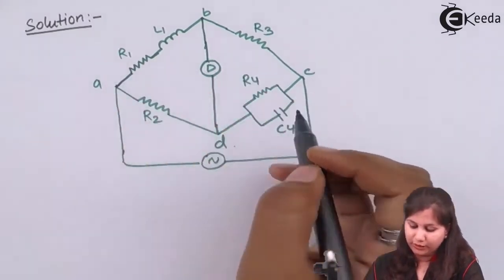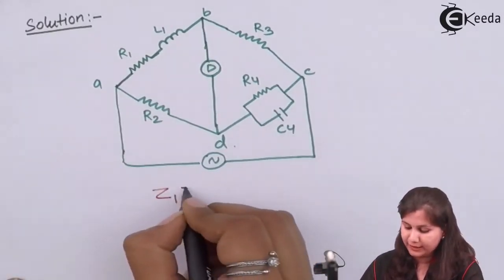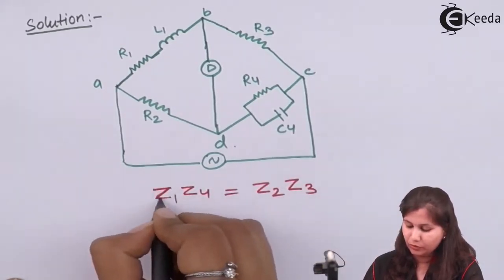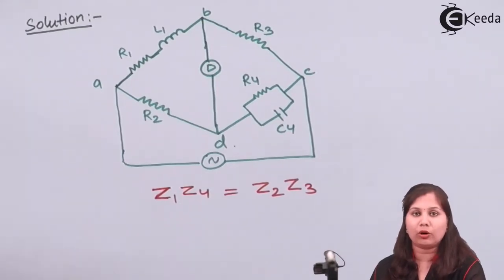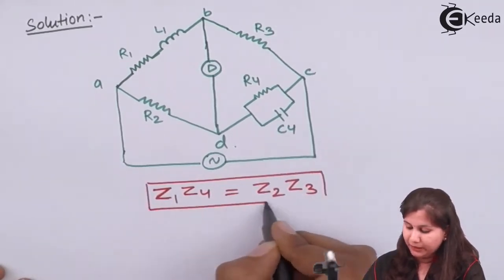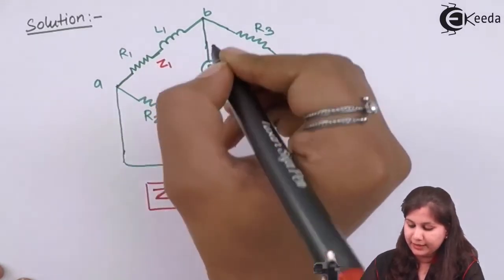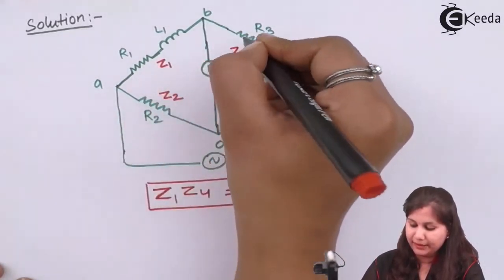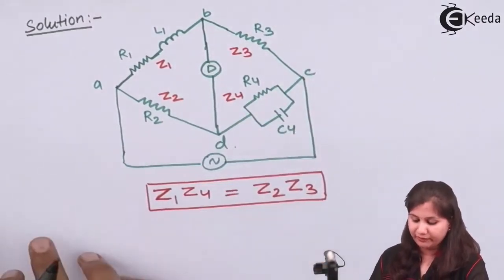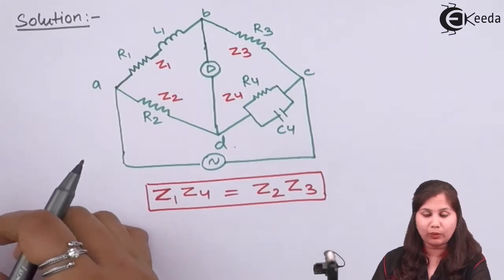We know that the balance equation for an alternating current bridge is given by Z1·Z4 = Z2·Z3. This is the general balance equation for an AC bridge. Z1 is the impedance in arm AB, Z2 is the impedance in arm DA, Z3 is the impedance in arm BC, and Z4 is the impedance in arm CD.